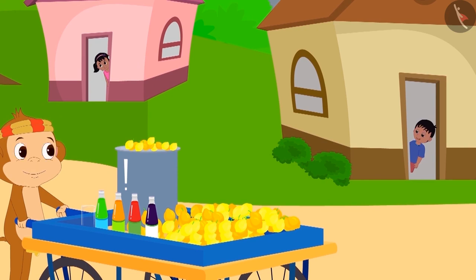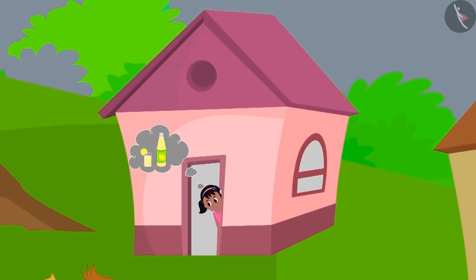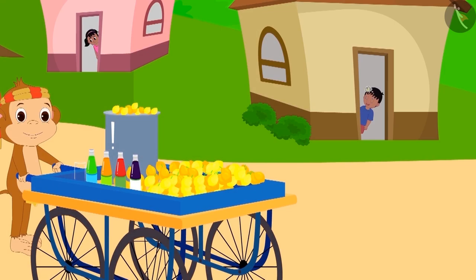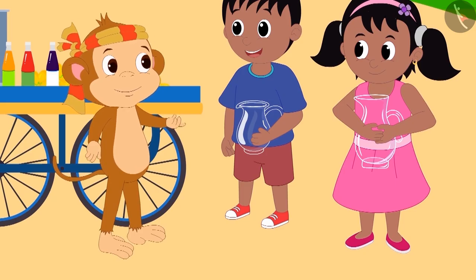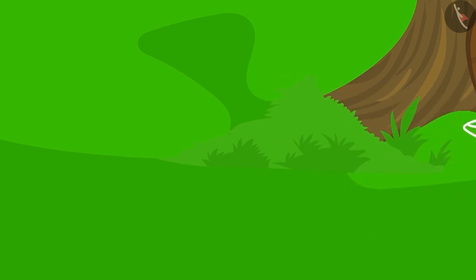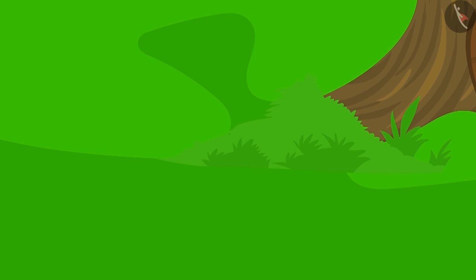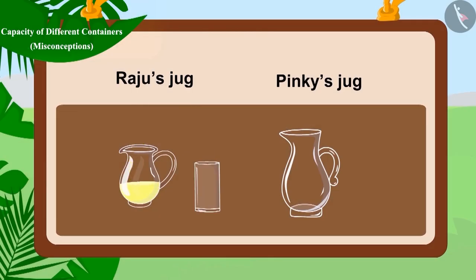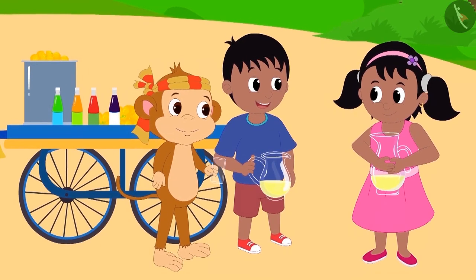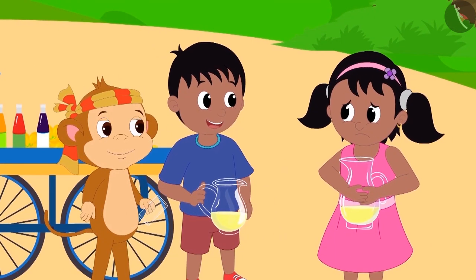Do you also like lemonade? Raju and Pinky brought jugs from their homes to buy lemonade from Babban. Babban first poured one glass of lemonade into both Pinky's and Raju's jug. Upon emptying a glass of lemonade, Raju's jug looks like this and Pinky's jug looks like this.